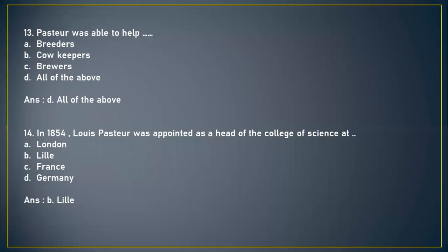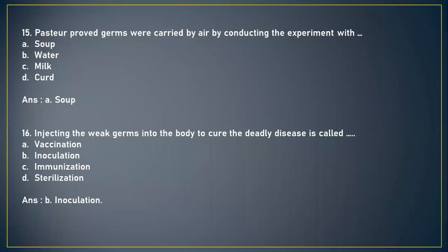Next question: Pasteur was able to help — A) breeders, B) cowkeepers, C) brewers, or D) all of the above. The answer is option D, all of the above. Next question: In 1854, Louis Pasteur was appointed as head of the college of science at — A) London, B) Lille, C) France, or D) Germany. The answer is option B, Lille.